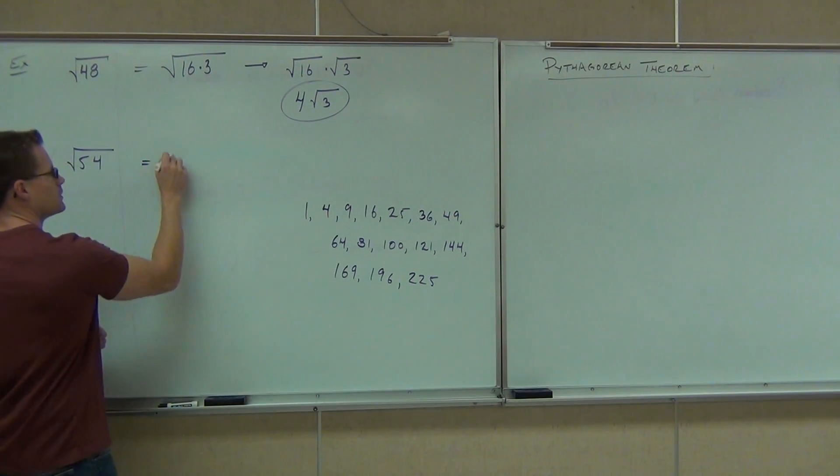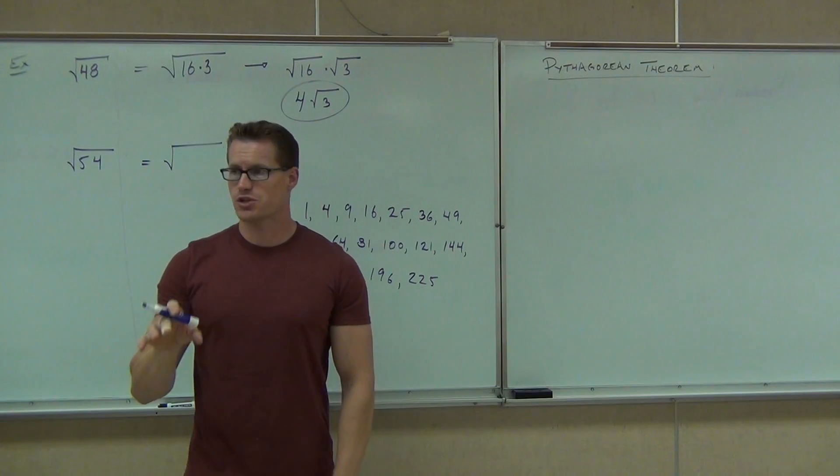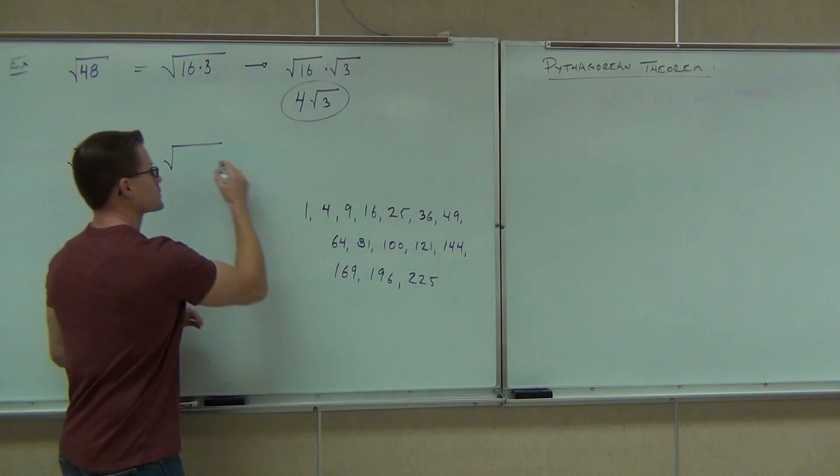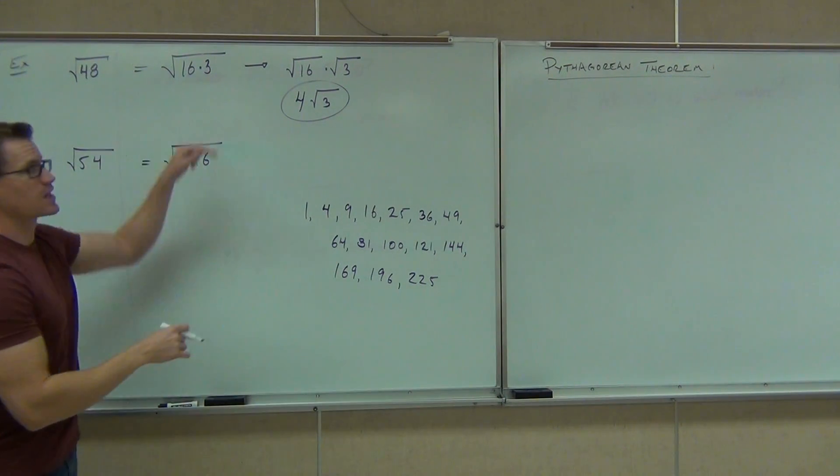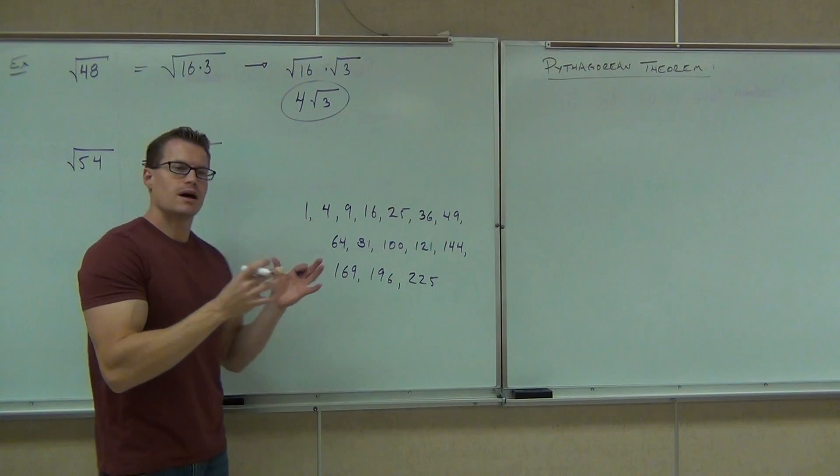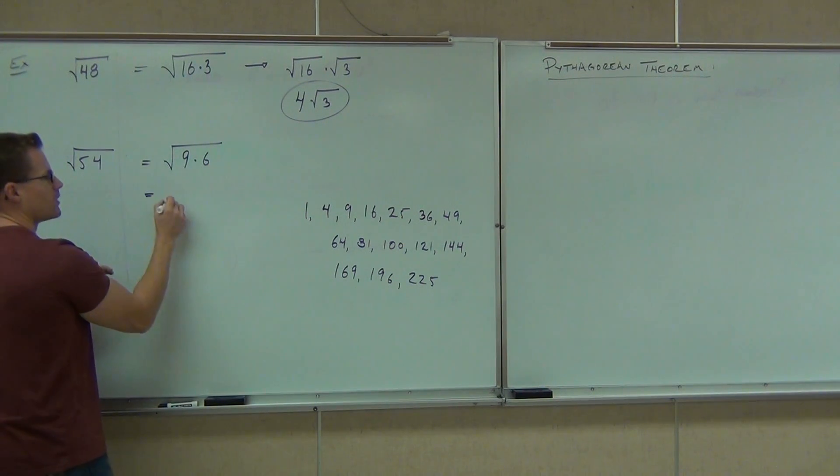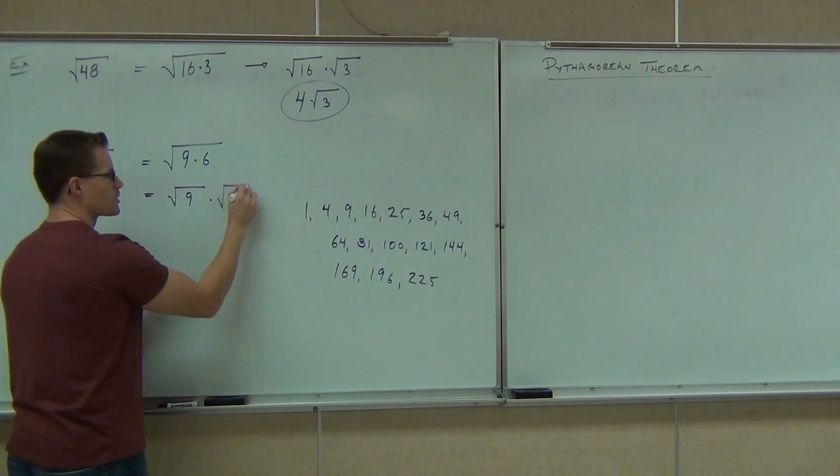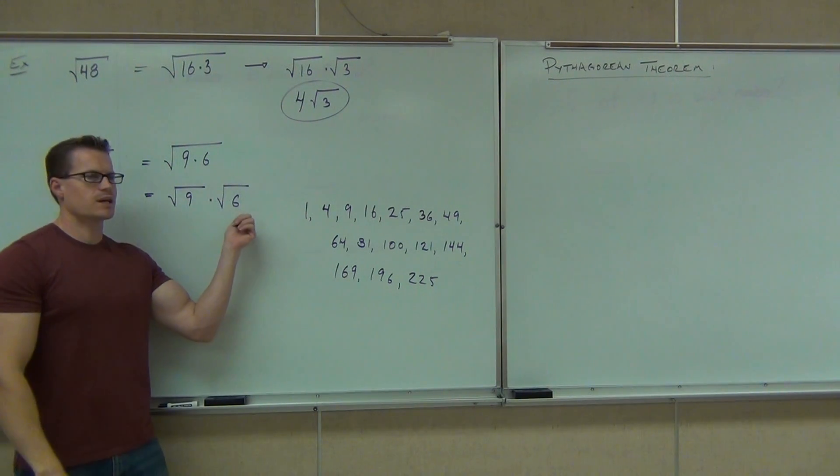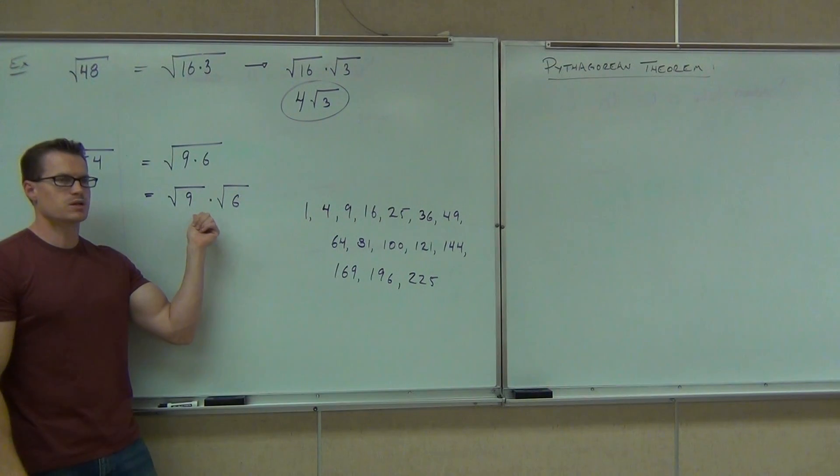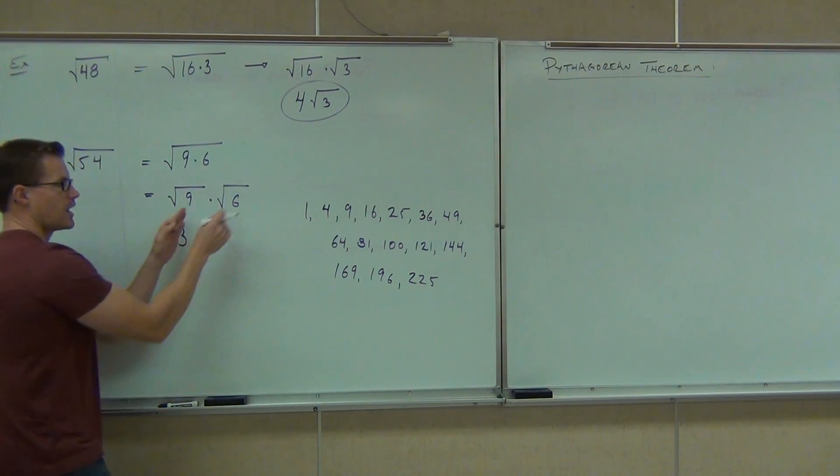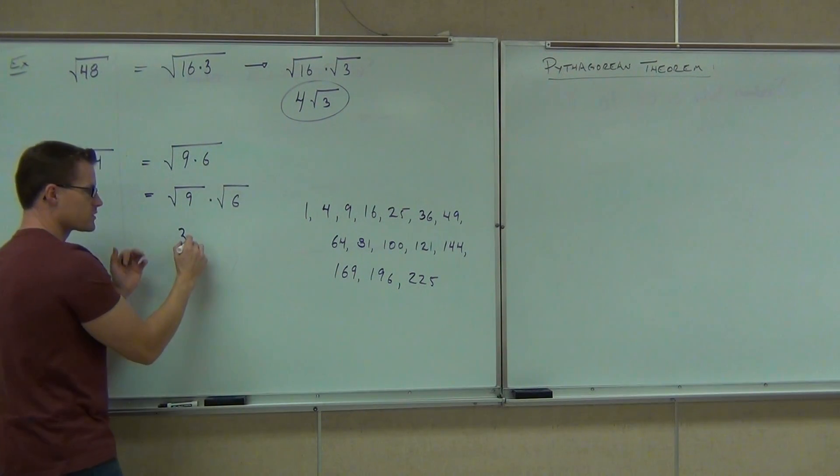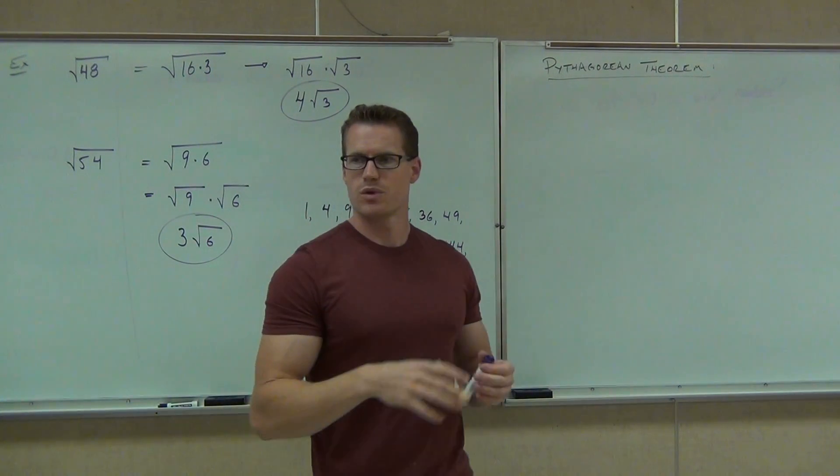You've got to write the 9 first. You've got to write the number you can take the square root of first. So this is going to be 9 times 6, not 6 times 9. Now, what allows you to simplify this is the fact that you can break this up now. This is the square root of 9 times the square root of 6. What's the square root of 9? 3. And the square root of 6, can you do anything with that? No. 3 root of 6. That's as simple as you can make that square root.